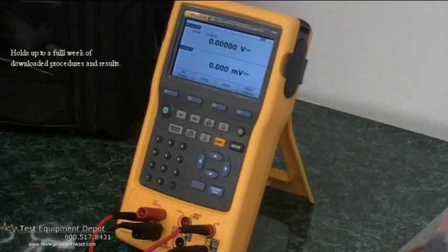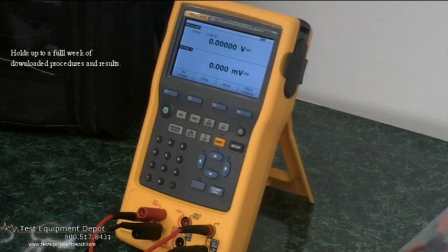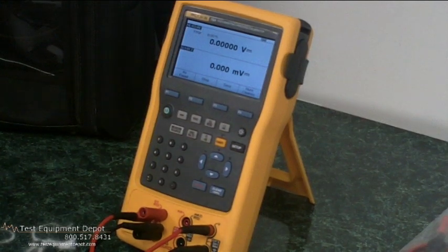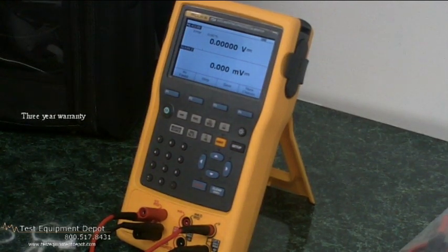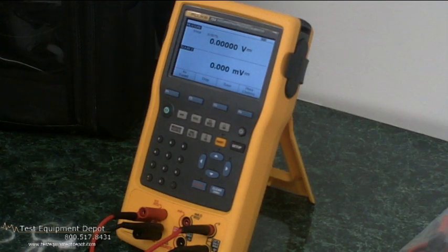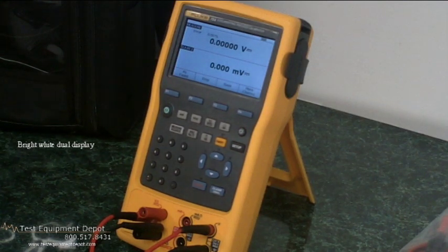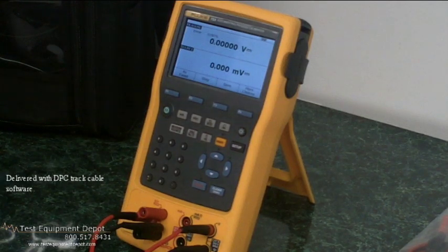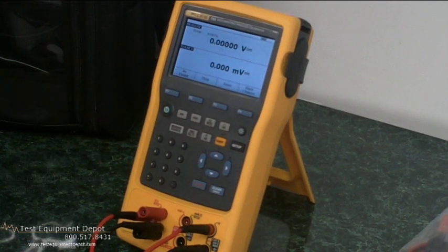Believe it or not, you can hold up to one week of downloaded procedures and calibration results. This unit has a three year warranty. It comes with a bright white dual display, rechargeable lithium-ion batteries that will give you up to 10 hours of uninterrupted use, and it comes also with the DPC track sample software.